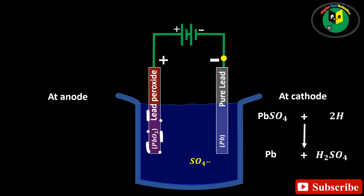Now, negative sulfate ion moves toward the electrode connected to the positive terminal of the DC supply, where they will give up their extra electrons and become radical sulfate. This radical sulfate reacts with the lead sulfate of anode and forms lead peroxide and sulfuric acid.